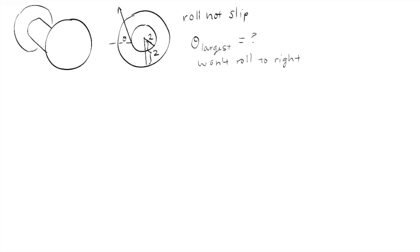So now we have to consider what it means to not roll to the right. In other words, if it doesn't roll to the right, it's not going to move. Nothing is going to happen. So it's going to remain in a state of equilibrium.